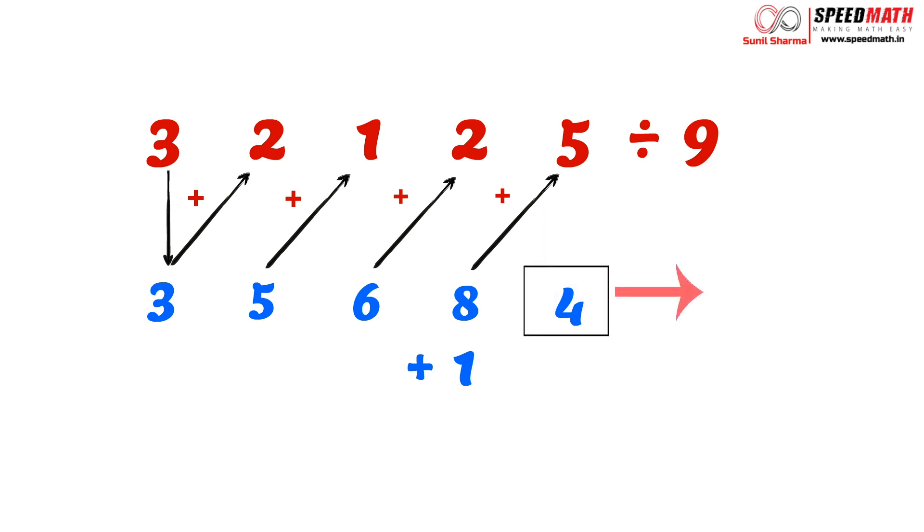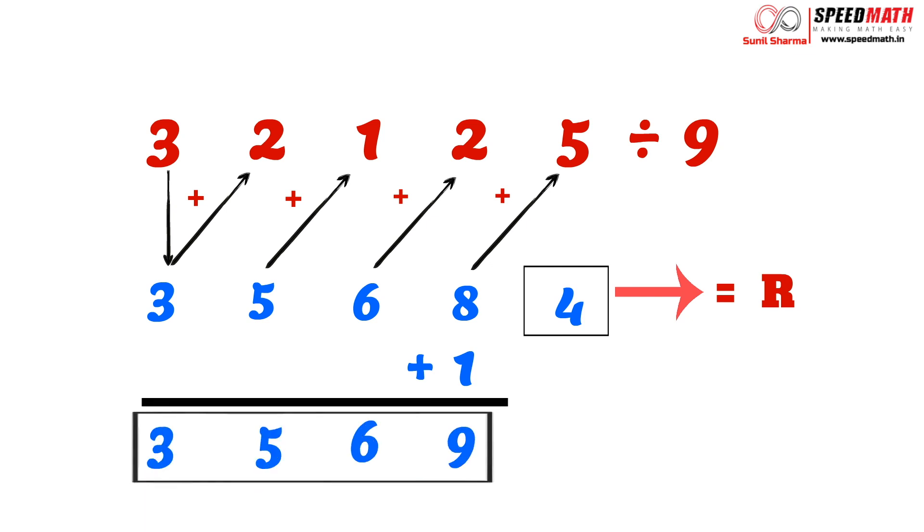Now let's find the quotient. We are going to add the remaining digits. So here 3, 5, 6, 8 plus 1 is 9, so 3569 is the quotient. The important learning here is if the remainder is greater than the divisor, then we need to remove 9 from that number and at the same time carry forward 1 to the previous digit. I hope you have understood.